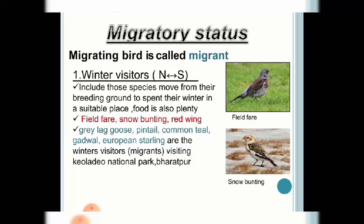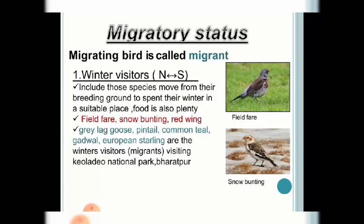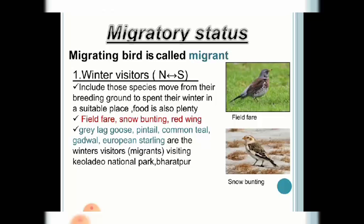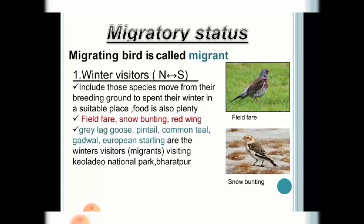Next we look at migratory status. Birds that migrate are called migrants. Under migratory status there are four different types. The first is winter visitors — these birds move from the northern pole to the southern pole and back, moving from breeding grounds to spend winter in more suitable places where food is plentiful. Examples include fieldfare and snow bunting. These birds can also be seen in Bharatpur National Park in India.